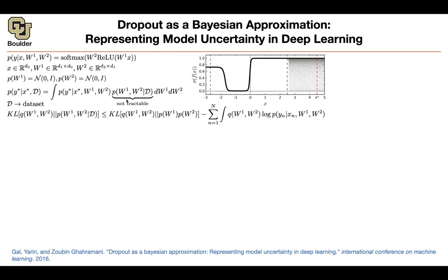Whenever you have a posterior that is intractable, you can do variational inference — we saw this with variational autoencoders. We say: I don't know P, but I know Q. I make some assumptions on Q, write down the KL divergence, use an inequality, and transform the KL divergence between Q and the posterior into the KL divergence between Q and the prior. Everything in that term you know and have full control over, and the other term gives you a likelihood.